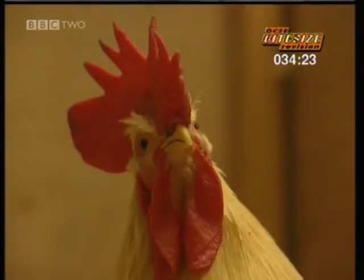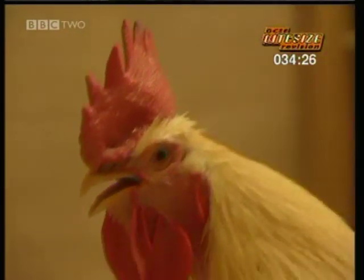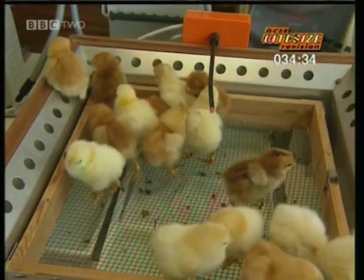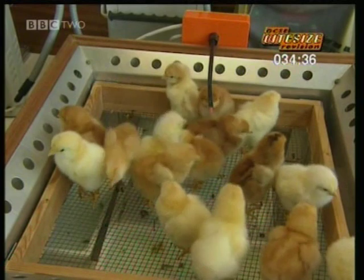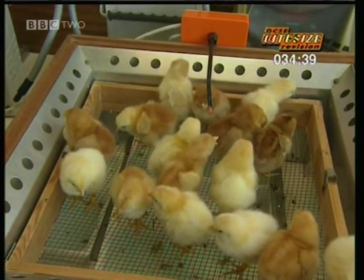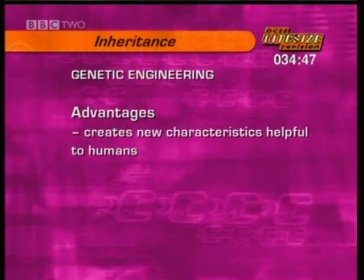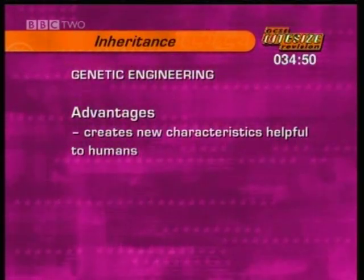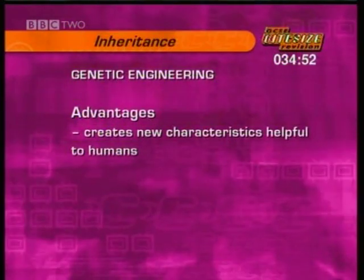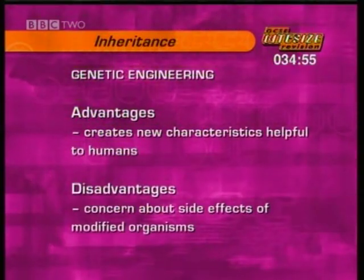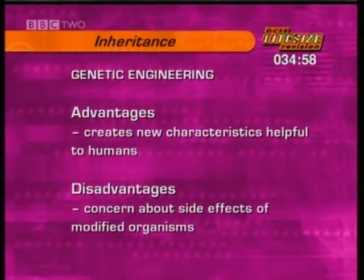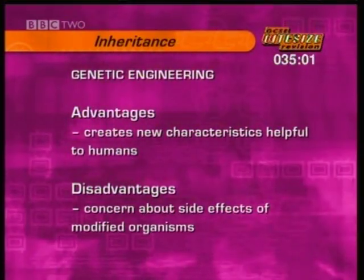A cockerel with the new gene has been used to breed a whole flock of birds that all contain it. The hens will hopefully lay eggs containing human proteins — a cheap and convenient source of drugs to treat illnesses that haven't been treatable before. Genetic engineering can create new characteristics helpful to humans, such as pest-resistant crops. On the other hand, people are concerned that we don't know what the long-term side effects might be of genetically modified organisms being at large in the world.